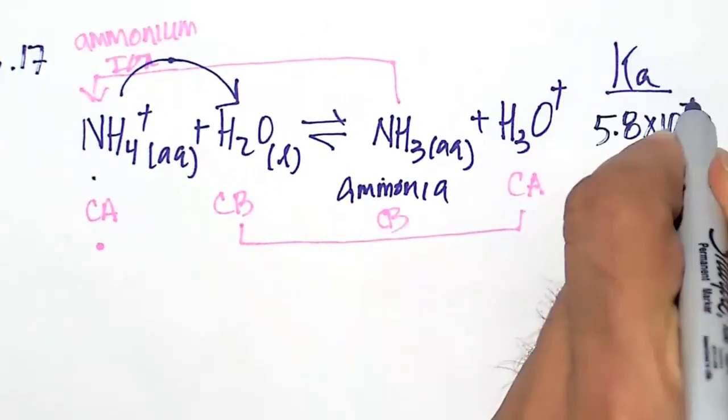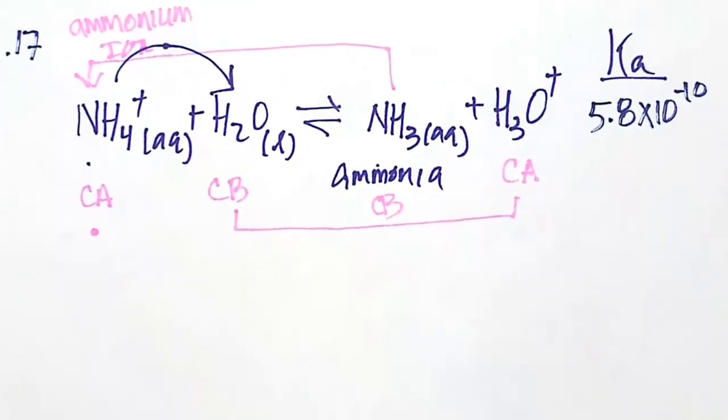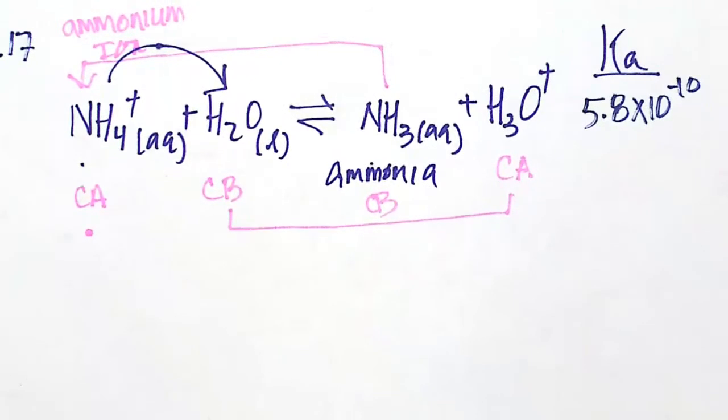Looking at the Ka for this, we get a value of 5.8 times 10 to the minus 10. A very small number, so most of this reaction is going to stay on the left-hand side. But enough of it is going to go to the right to register a pH, which is ultimately what we want to solve in this problem.